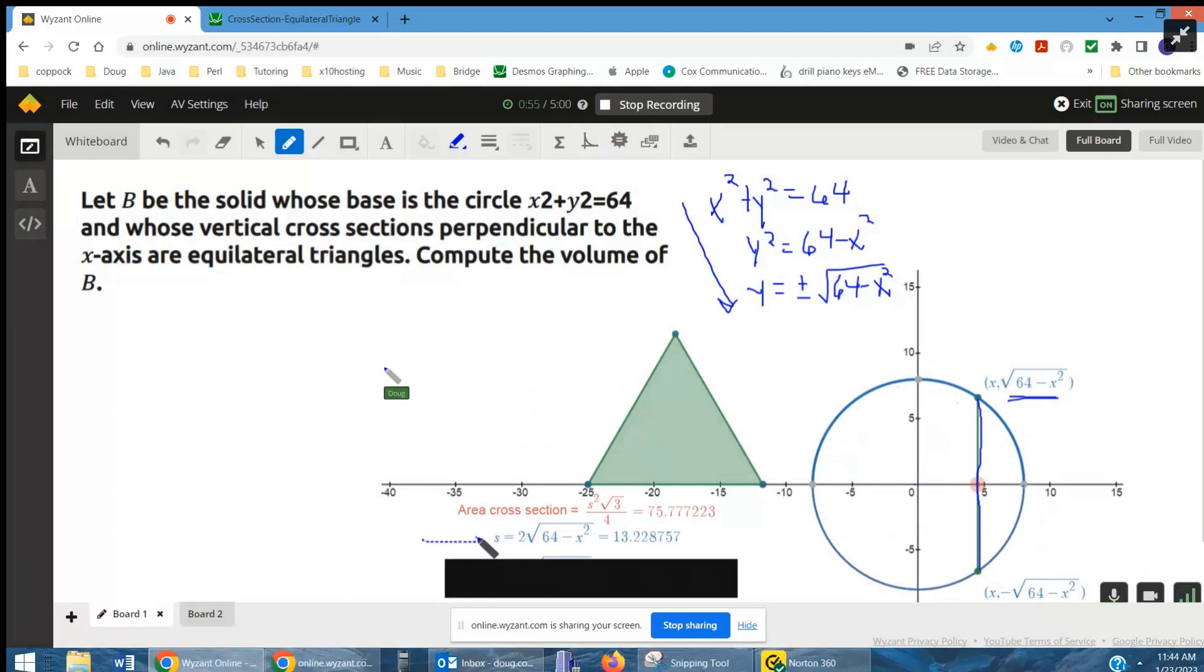That's what this s is right here, the side of an equilateral triangle. And the area of an equilateral triangle is s squared radical 3 over 4.